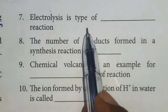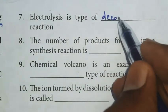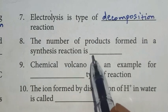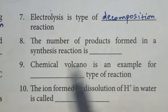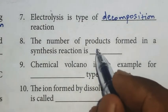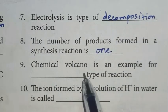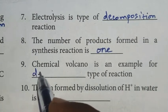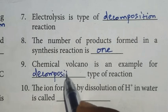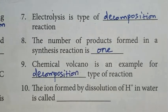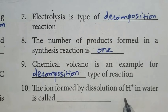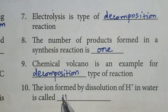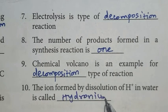Seventh: Electrolysis is type of decomposition reaction. Eighth: The number of products formed in a synthesis reaction is 1. Ninth: Chemical volcano is an example for decomposition type of reaction. Tenth: The ion formed by dissolution of H+ in water is called hydronium ions.